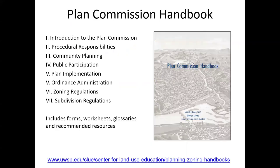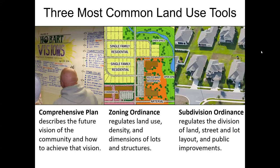I went pretty quickly through how plan commissions are formed and their composition. A great resource is the plan commission handbook, which you can find linked on our website. Right next to that is also the zoning board handbook — both are freely available electronically and you can order hard copies. Now, I promised I would frame your role in terms of the tools you're likely to be using. Three of the most common land use tools in Wisconsin are the comprehensive plan, the zoning ordinance, and the subdivision ordinance.